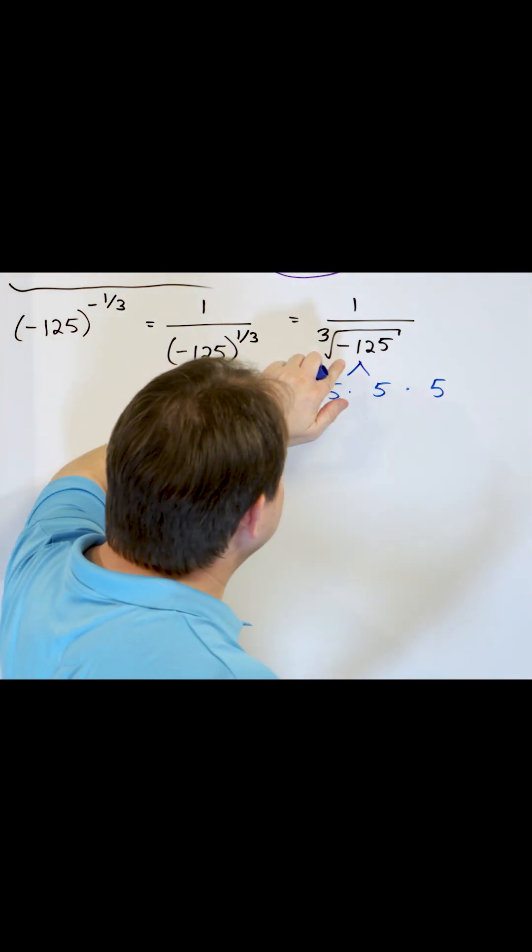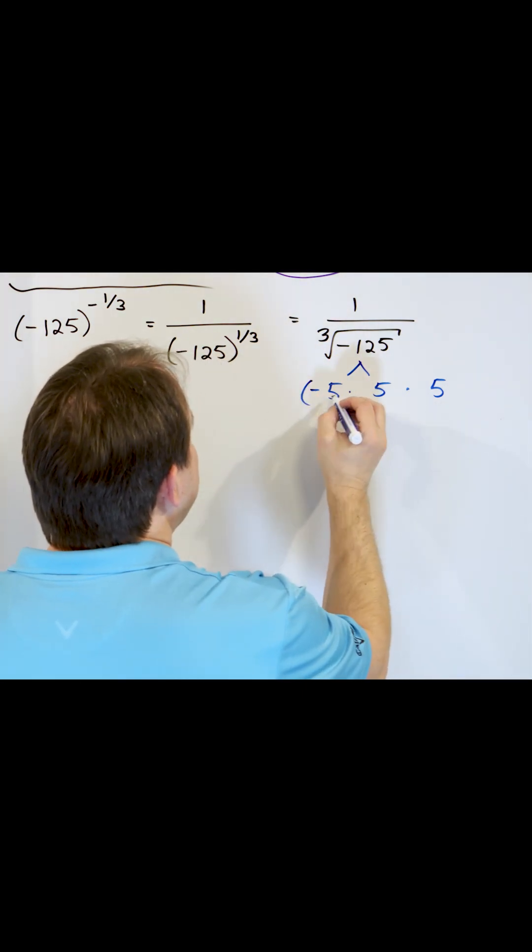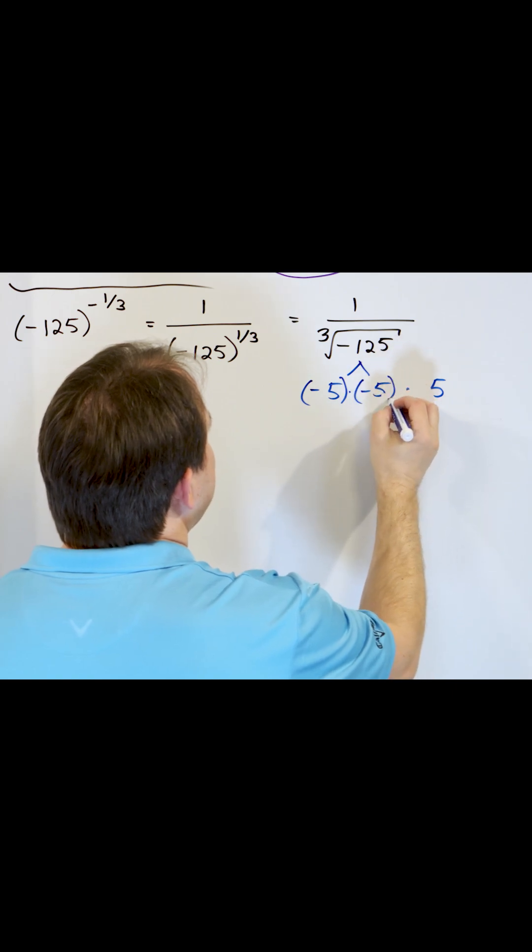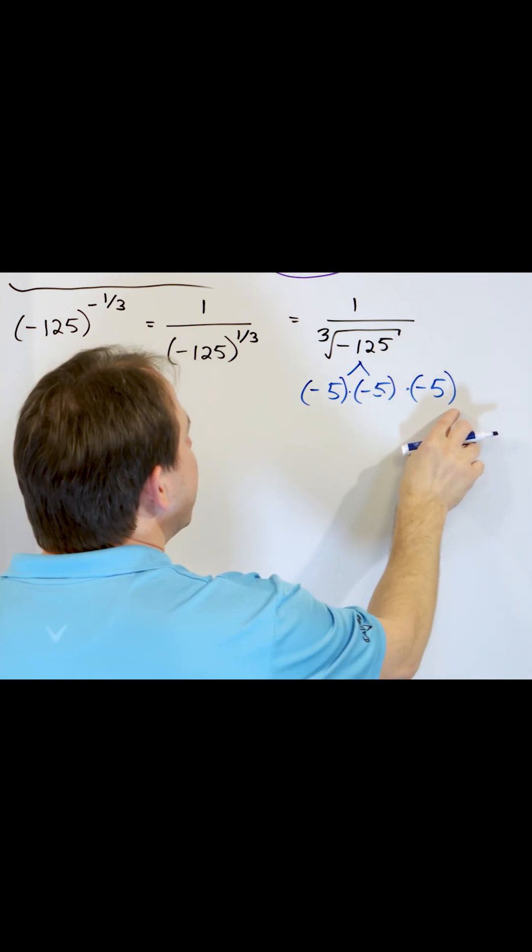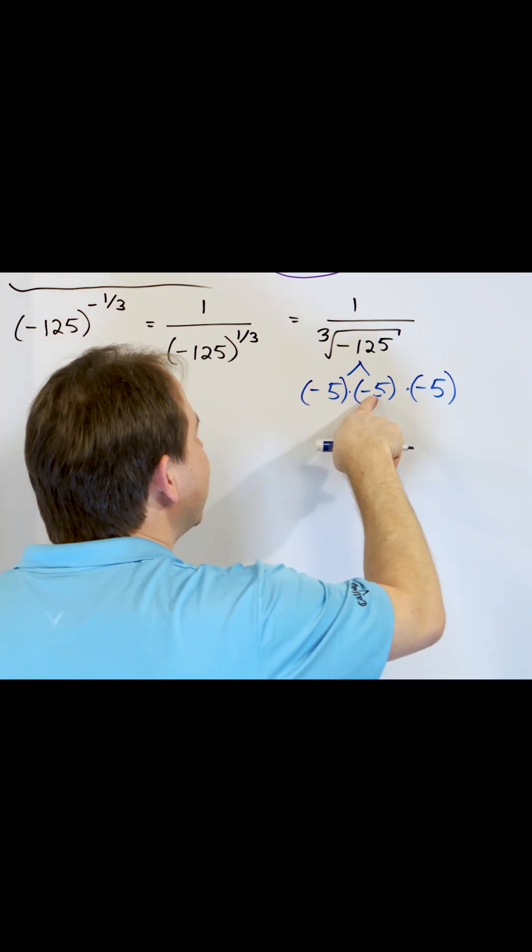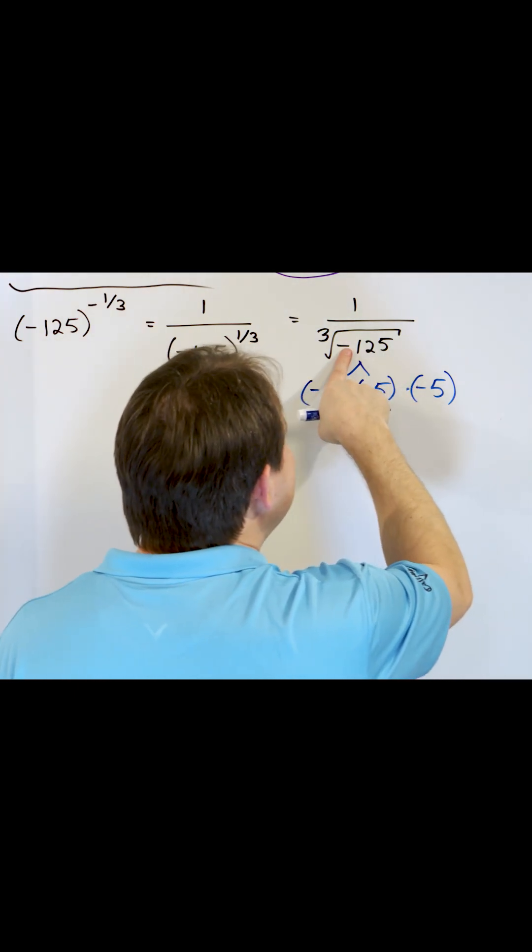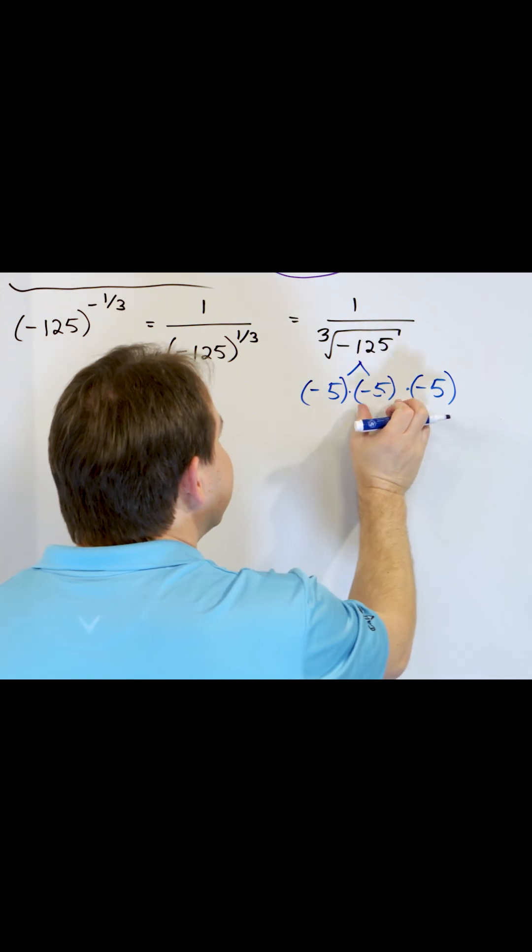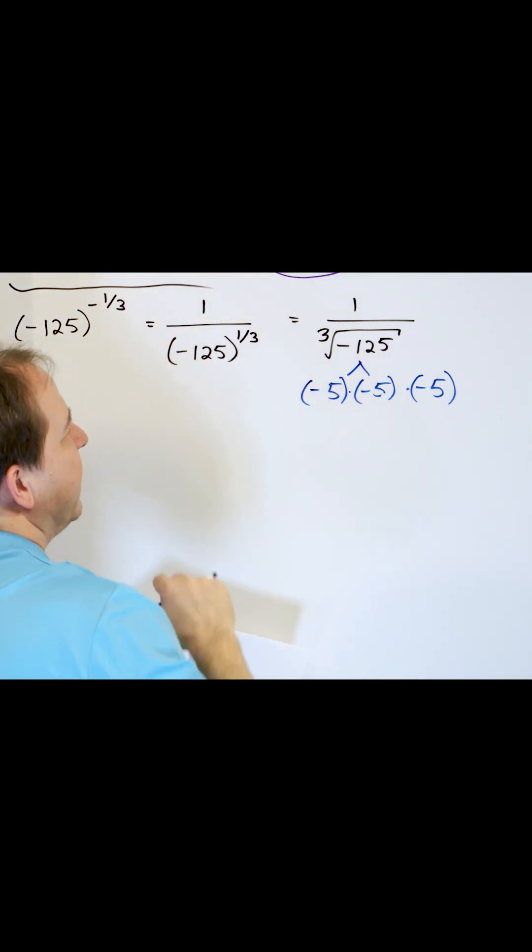But this isn't quite right because you have a negative there. But if it's negative 5 times negative 5 times negative 5 under this factor tree, they all multiply together. Think of it this way: negative times negative is positive, but then positive times negative makes it negative again. So this times this times this actually does equal negative 125, and that's why it does exist.